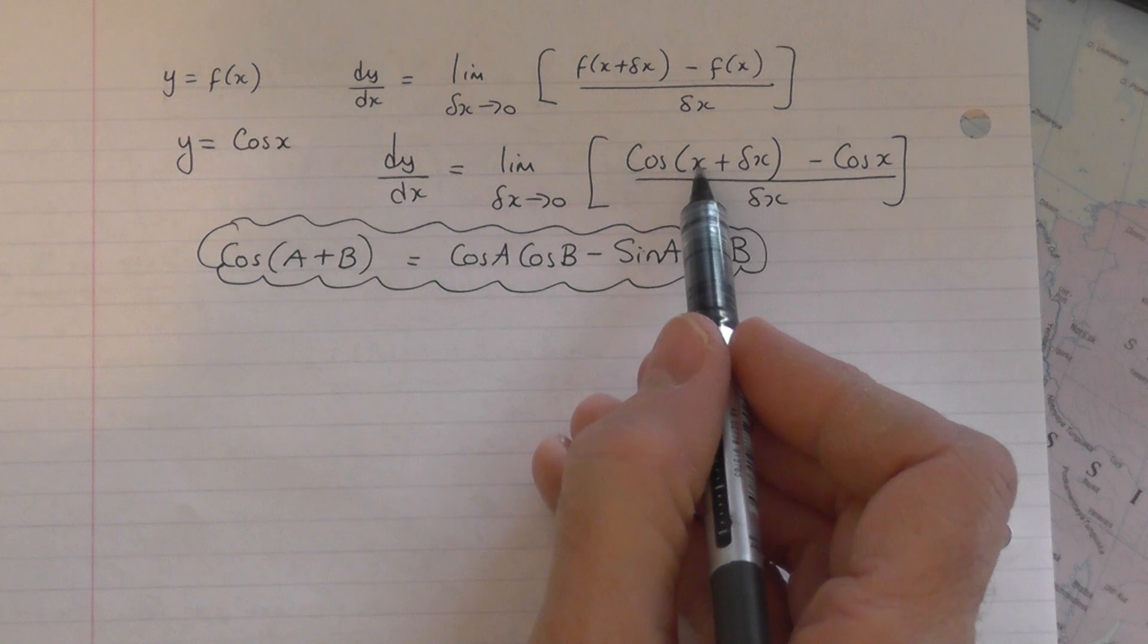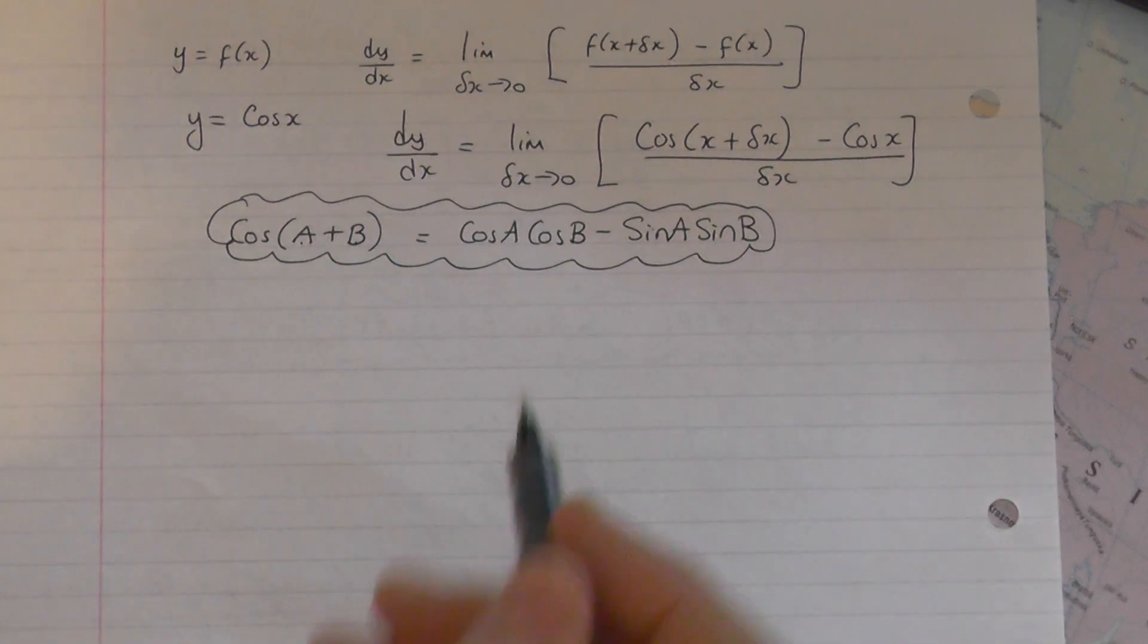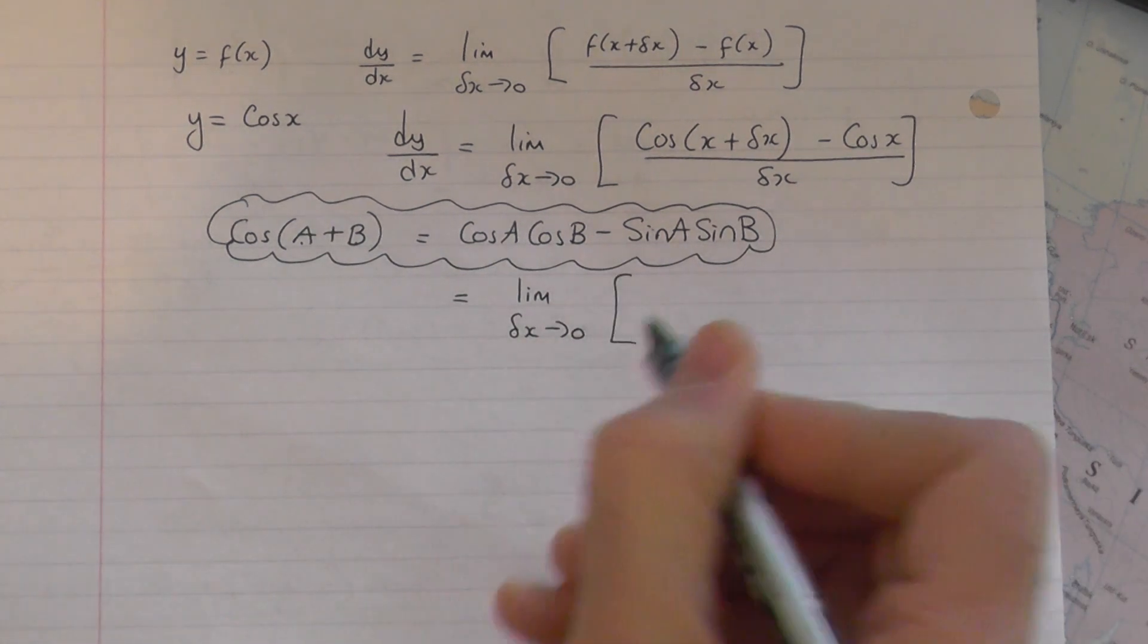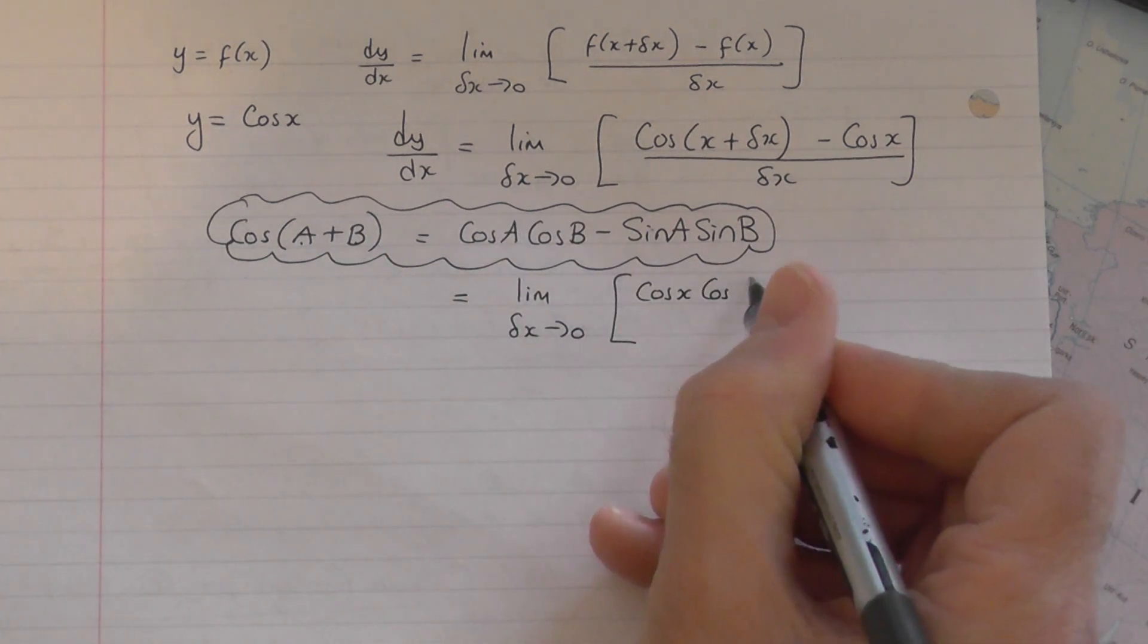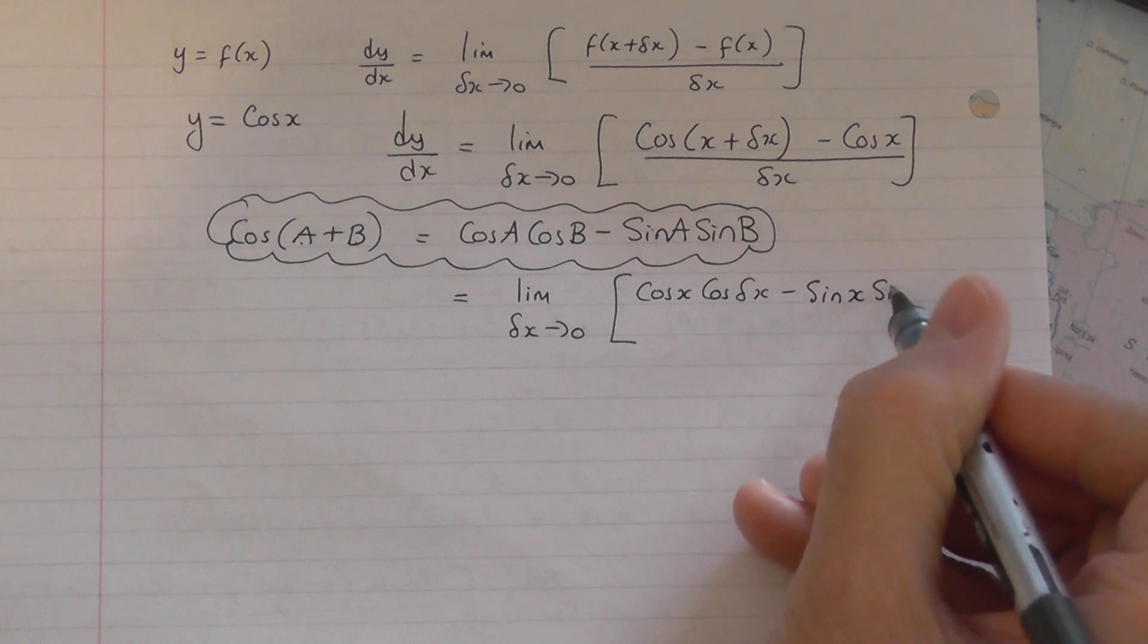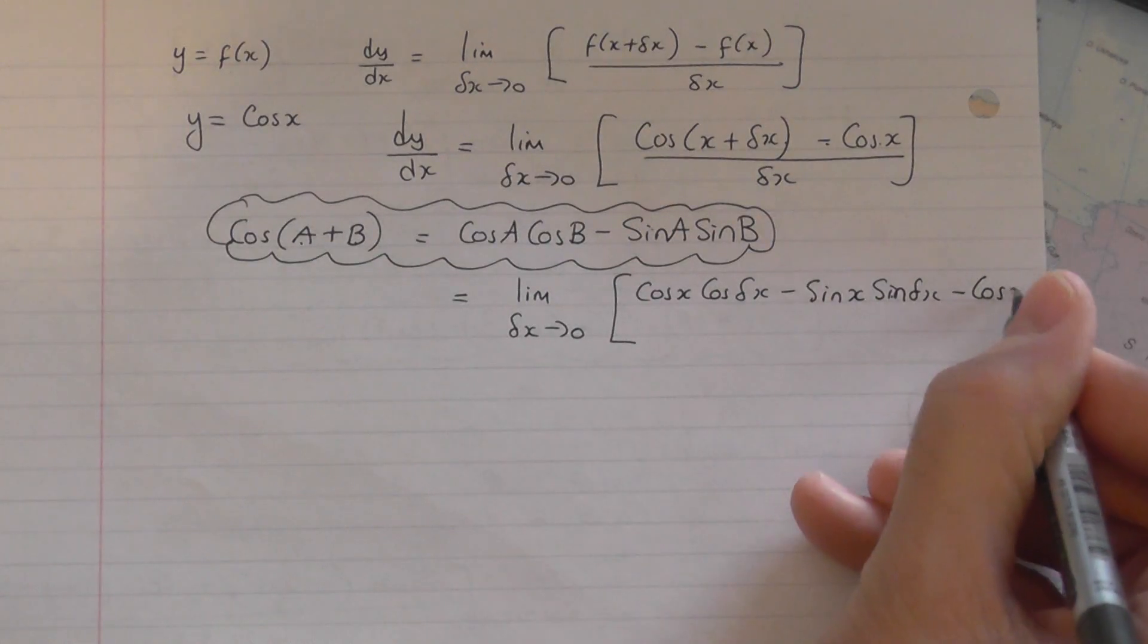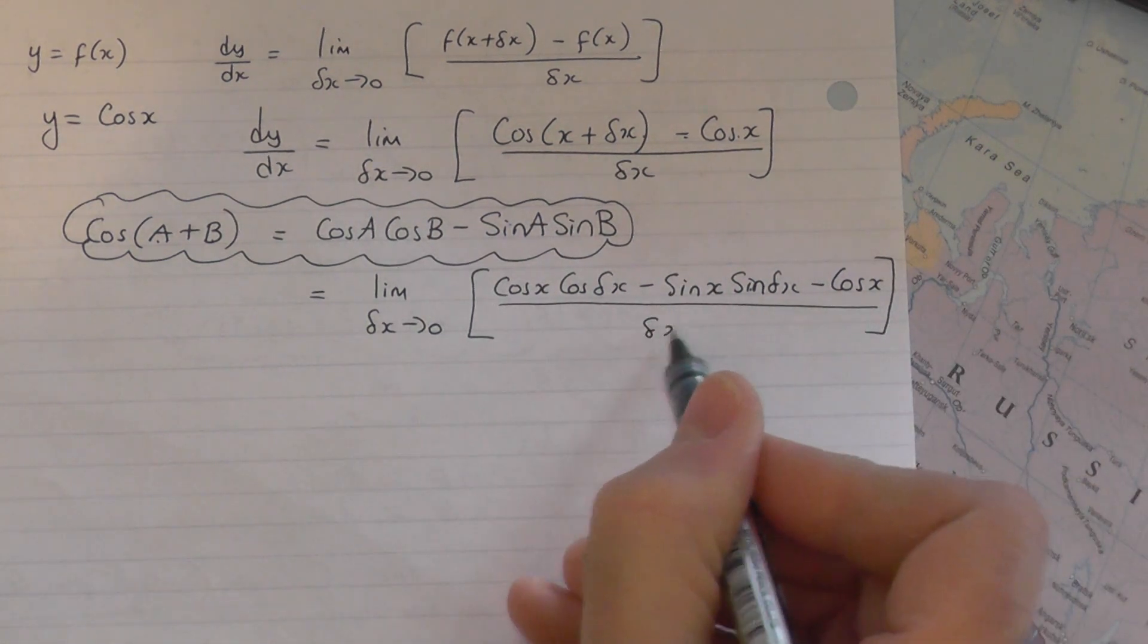So obviously in this case, x is what the a was and the delta x is what the b was. So let's now go back and apply this identity to this expression. So dy by dx will be the limit, delta x tend to naught of, so it's cos the first, cos the second, so it's cos of x, cos of delta x. And then it's minus, minus sine of the first, sine of the second. So all of that is equivalent to that there. Then you have take away cos x on the end, so we'll squeeze that in there. And it's all going to be divided by delta x.